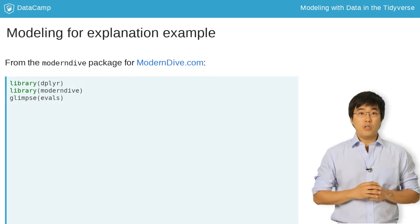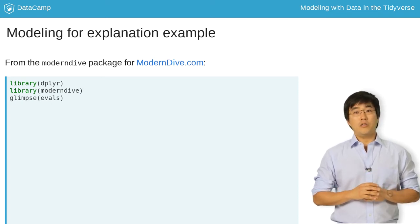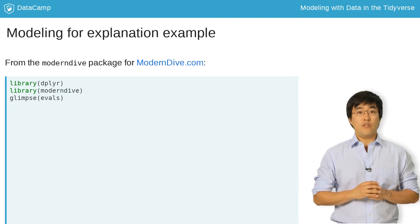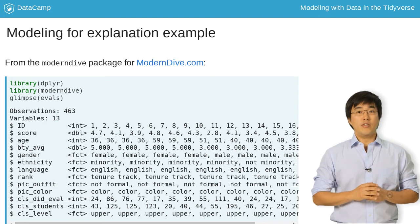The evals data frame included in the moderndive package contains this data. The moderndive package is used in moderndive.com, an open source electronic textbook on statistical and data sciences that Chester Ismay of DataCamp and I have co-authored. This package includes other data and functions you'll be using in this course. Let's preview the data using the glimpse function from the dplyr package. Observe that there are 463 instructors and 13 variables in this data frame.